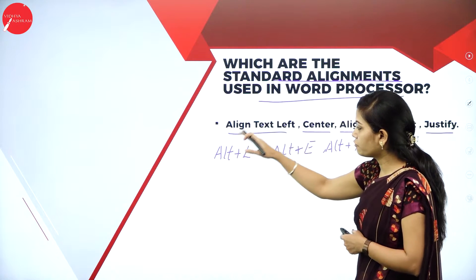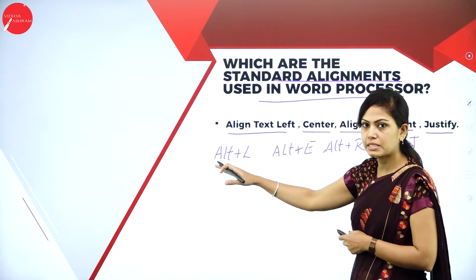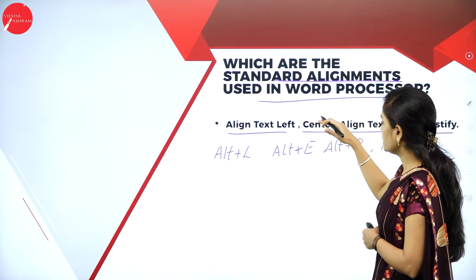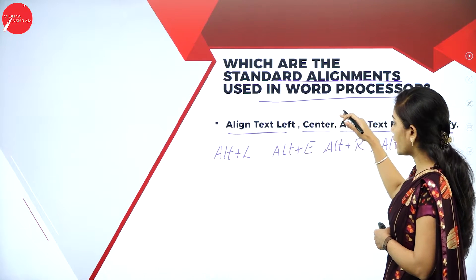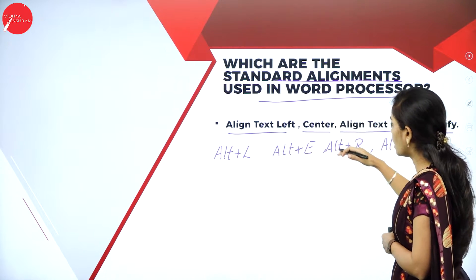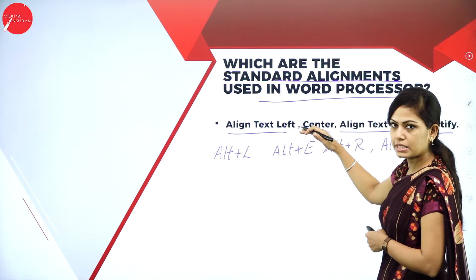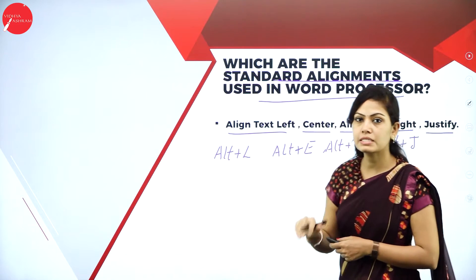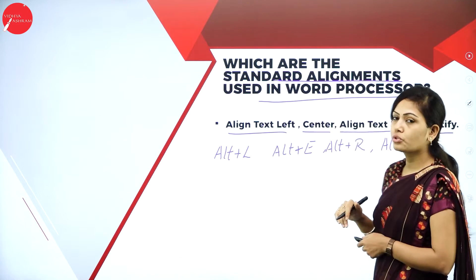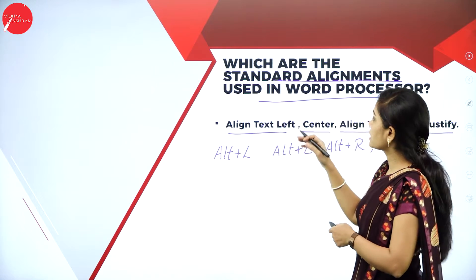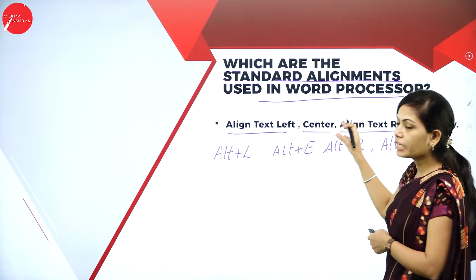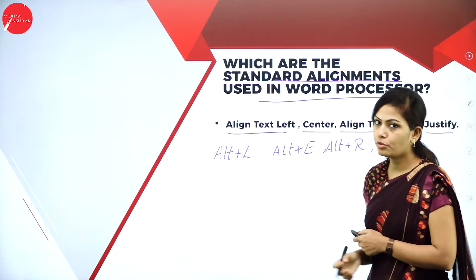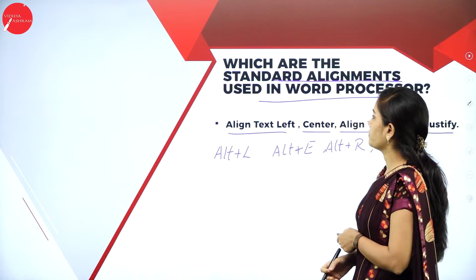So to summarize: align text left is Alt+L, align text right is Alt+R, center is Alt+E, and justify is Alt+J. These are the standard alignments used in word processing.